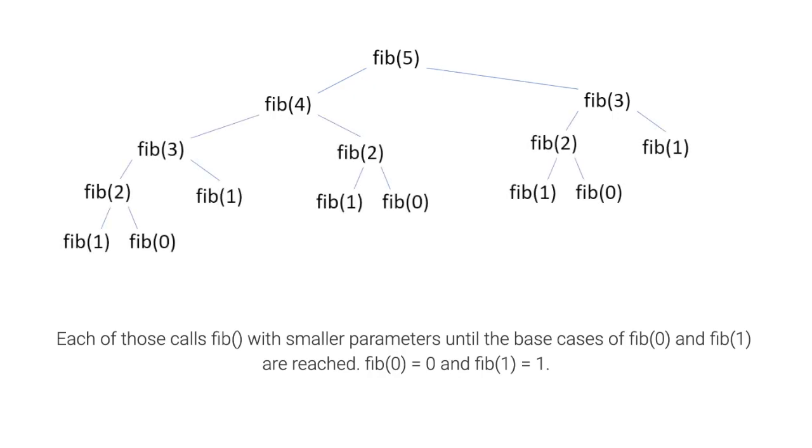Each of those calls Fibonacci with smaller parameters until the base cases of Fibonacci 0 and Fibonacci 1 are reached. Fibonacci 0 equals 0 and Fibonacci 1 equals 1.